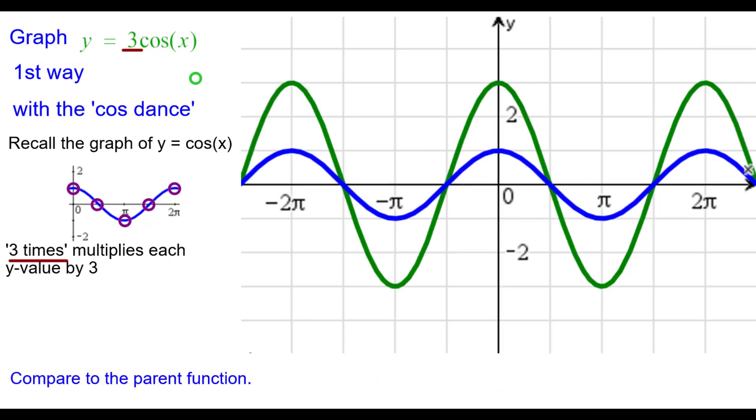Compare it to the parent function. The green is our graph. The blue is the parent function. We can see that the blue coordinate times 3 is the green coordinate. Not just here, but here, and here, and actually everywhere.